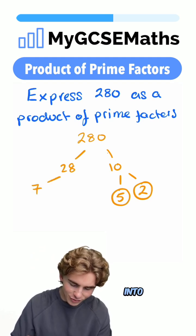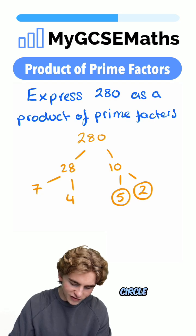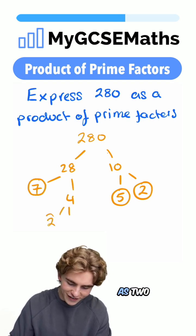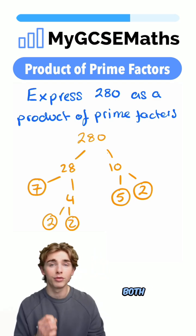28 can be broken down into 7 multiplied by 4. Circle 7 because it's prime, and finally 4 can be written as 2 times by 2. Circle them both because they're prime.